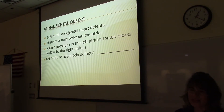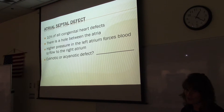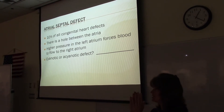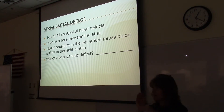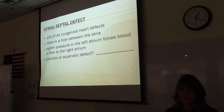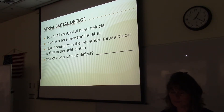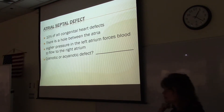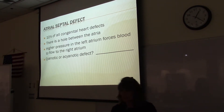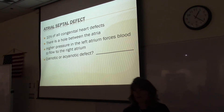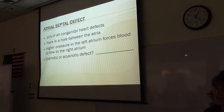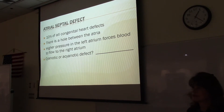The next defect is atrial septal defect — a hole between the atria where the foramen ovale didn't close properly. Maybe the flap was too small or there's just incomplete closure. This happens in 10% of all congenital heart defects. The higher pressure in the left atrium forces blood to flow into the right atrium. Blood went to the lungs, picked up oxygen, came back to the left heart, and then flows back over to the right atrium through the hole. This does not cause cyanosis, so it is classified as acyanotic.